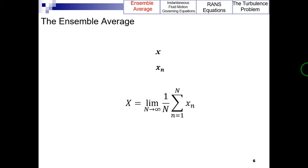In general, the lowercase x underscore n could be the realization of any random variable. The uppercase X defined by this equation represents the ensemble average of it. The quantity uppercase X is sometimes referred to as the expected value of the random variable lowercase x, or even simply its mean.